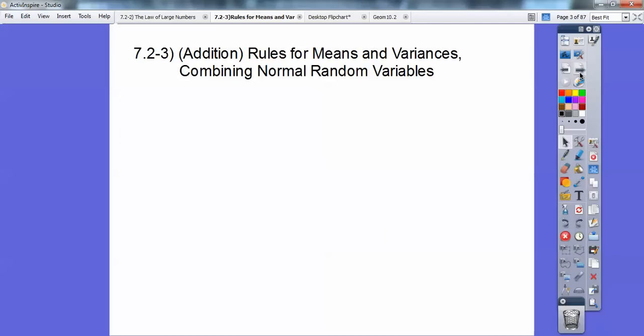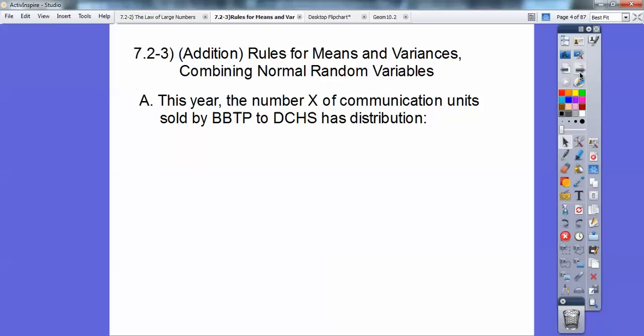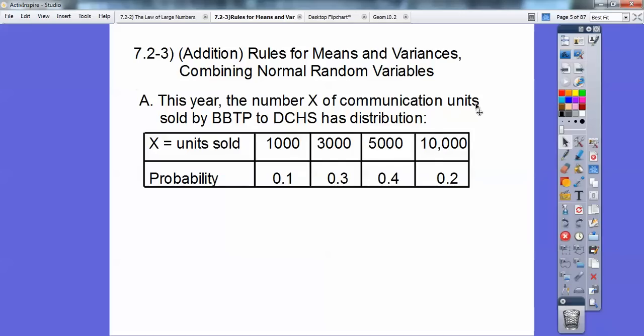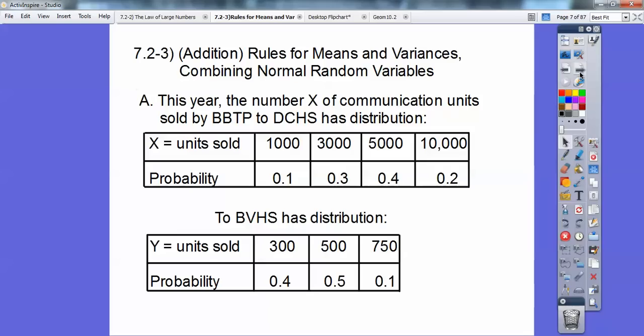Alright, so addition rules for means and variances and combining normal random variables. So this here, the number of x of communication units sold by BBTP to DCHS has this distribution. You're going to pause and write all that down. And so here's the distribution, this number, probability, this number with this probability, and so on. And then to BBHS it has this distribution. You're going to pause and write that down.